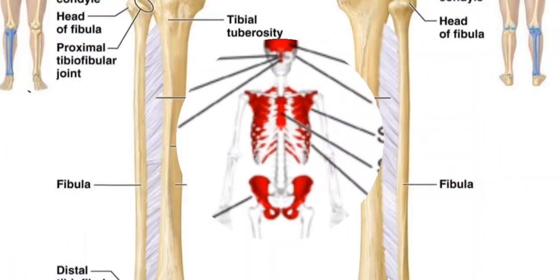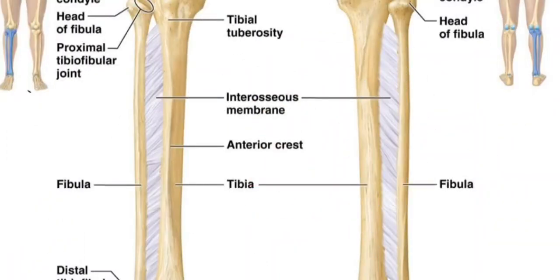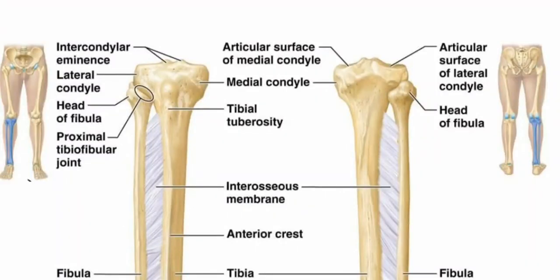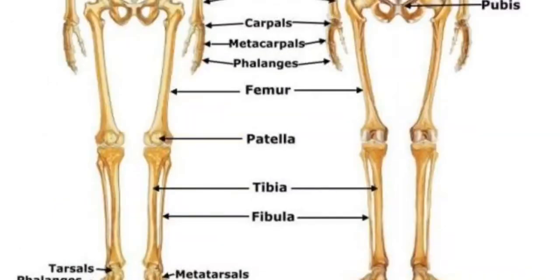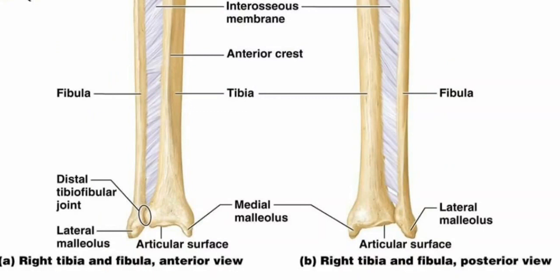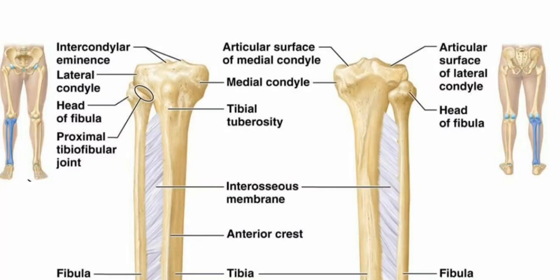Long bones are longer than they are wide and include the femur, which is the longest bone in the body. Long bones function to support the weight of the body and facilitate movement. They are mostly located in the appendicular skeleton and include bones in the lower limbs: the tibia, fibula, femur, metatarsals, and phalanges; and bones in the upper limbs: the humerus, radius, ulna, metacarpals, and phalanges.